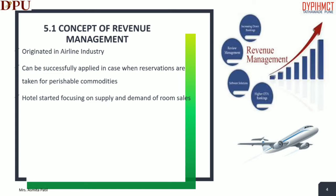As demand increased for the targeted timeframe, the hotel would increase its room rates. Hotels also aligned rate strategies with market segmentations by offering select discounts to featured groups such as American Automobile Association members and AARP members. Hotels did some specialized forecasting — for example, if a citywide convention was coming, a manager might believe the hotel would have higher occupancy and would fine-tune room rates and projected occupancy accordingly.